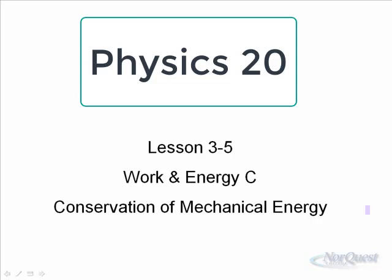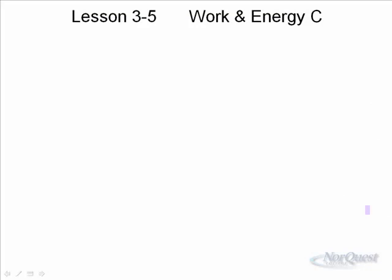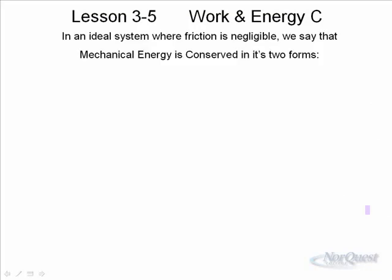We're going to now talk about conservation of mechanical energy using some examples where we have kinetic energy being turned into potential or potential into kinetic in an ideal system. In an ideal system where friction is negligible, we say that mechanical energy is conserved in its two forms. Those two forms are kinetic energy, which is 1/2 mv squared, and potential energy, which is mgh.